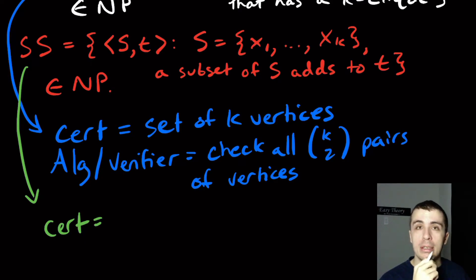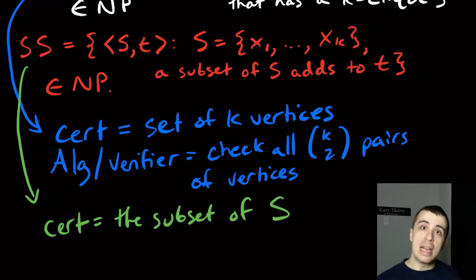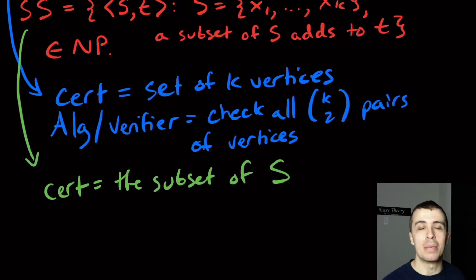And what you can think about is: well, give me the subset of the set of integers, and then I can verify whether or not they add up to t. So the certificate here is the subset of S, and that is obviously polynomial in the size of the set of numbers because it's less than the input size, so it's at most linear in the input size, which is totally good.